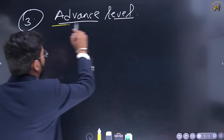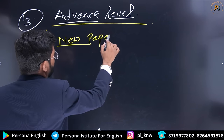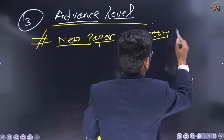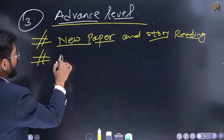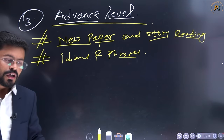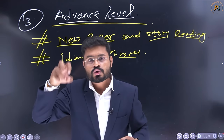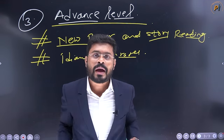The third level is the advanced level. What do you need to do? You need to do newspaper reading and story reading — both things together. You need to learn idioms and phrases in your language. By this point, we are able to speak English because after completing the semi-advanced level, we can speak. When you read stories, you develop your basic English, and the brain is so prepared that it can speak.